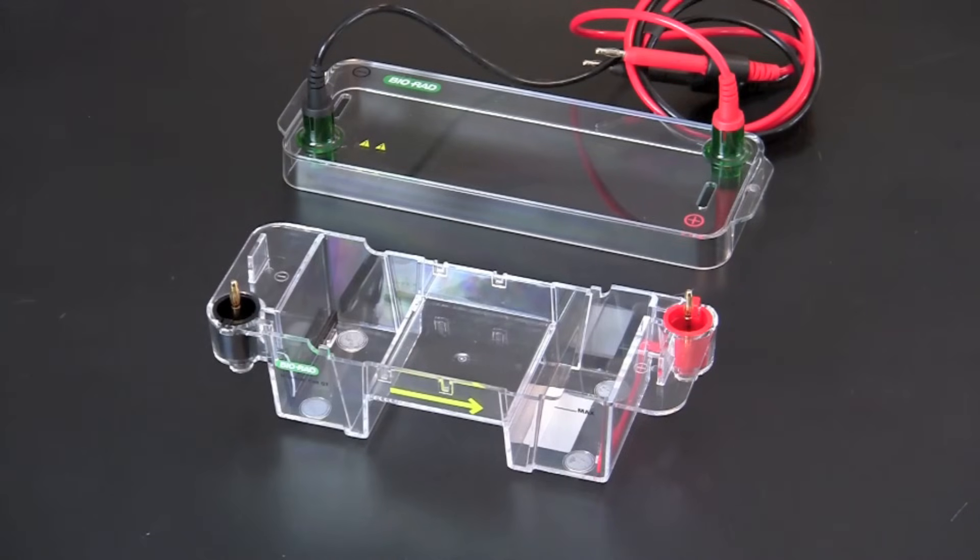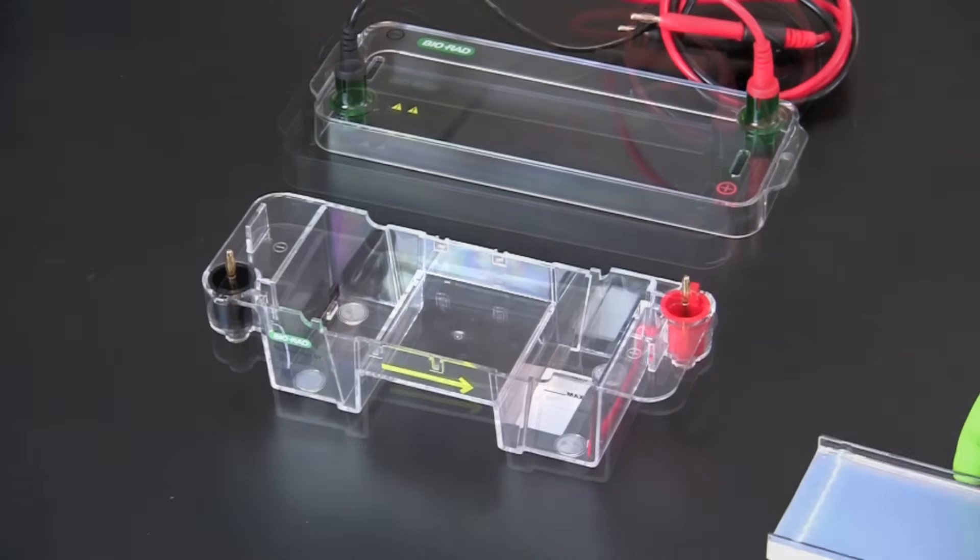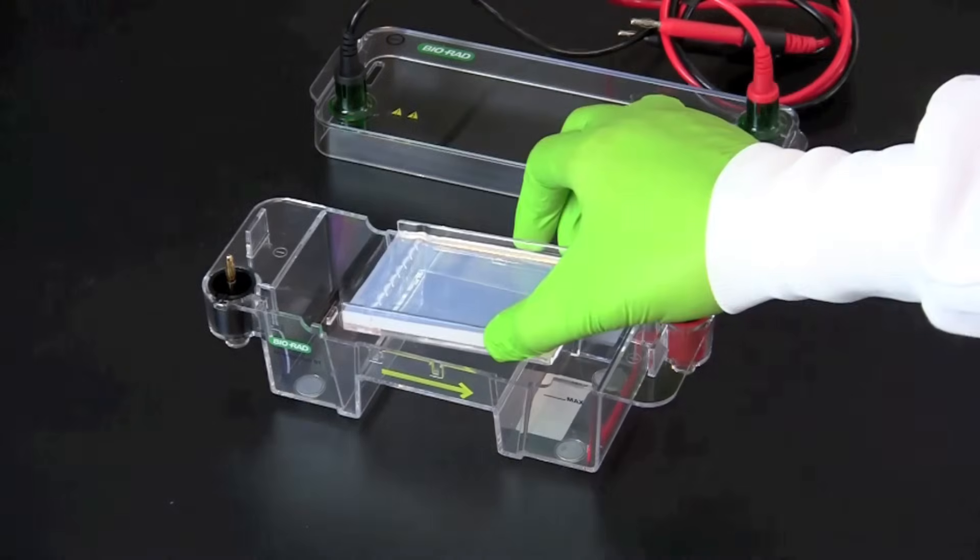First, align the gel so that the wells are closest to the negative or black electrode. DNA is negatively charged and will move from the negative electrode through the gel toward the positive or red electrode. Place the agarose gel into the gel chamber.